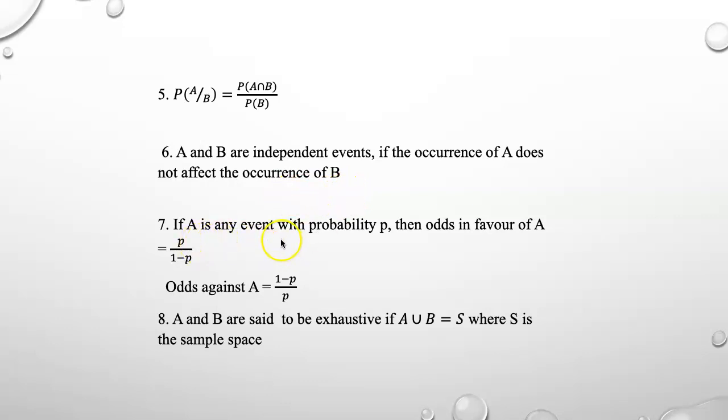If A is any event with probability P, then odds in favor of A is P by 1 minus P, odds against A is 1 minus P by P. We need to remember this formula because sometimes you get problems asking odds in favor of an event or odds against an event.